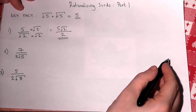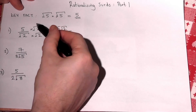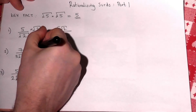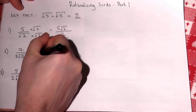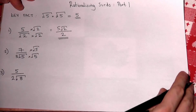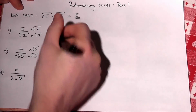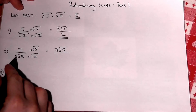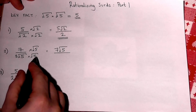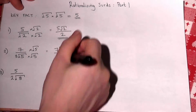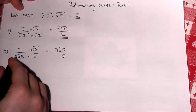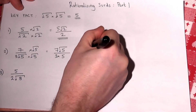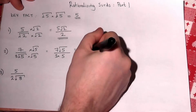In these simple examples, you just multiply the top and bottom by the surd underneath. In the second example, I multiply by root 5: the top just becomes 7 root 5, and the bottom has root 5 times root 5, which is 5, and there's a 3 there, so it just becomes 7 root 5 over 15.